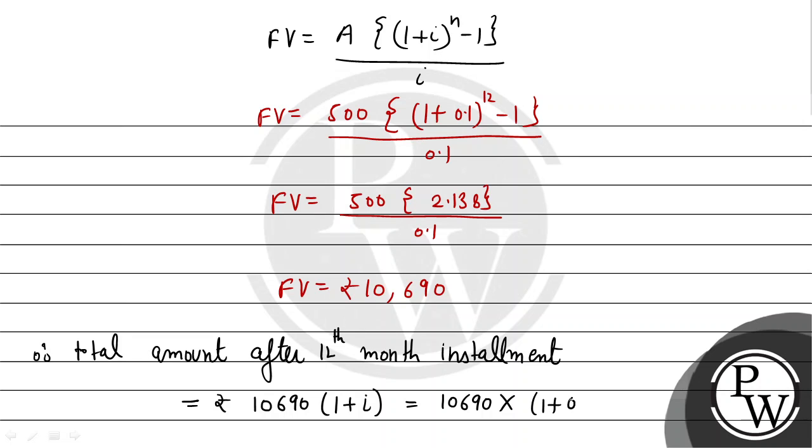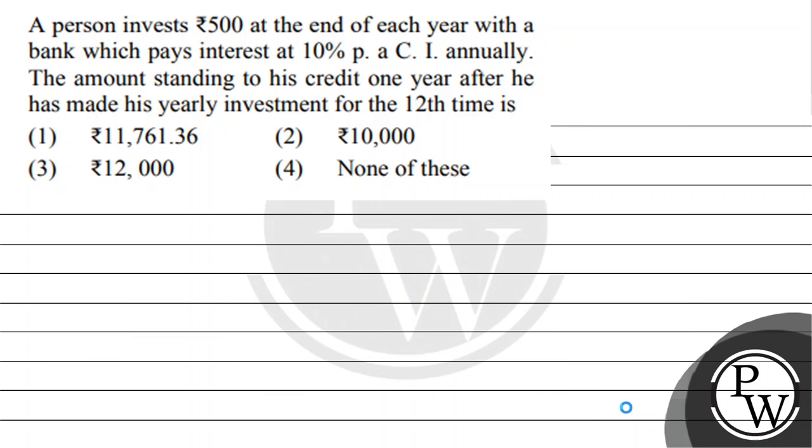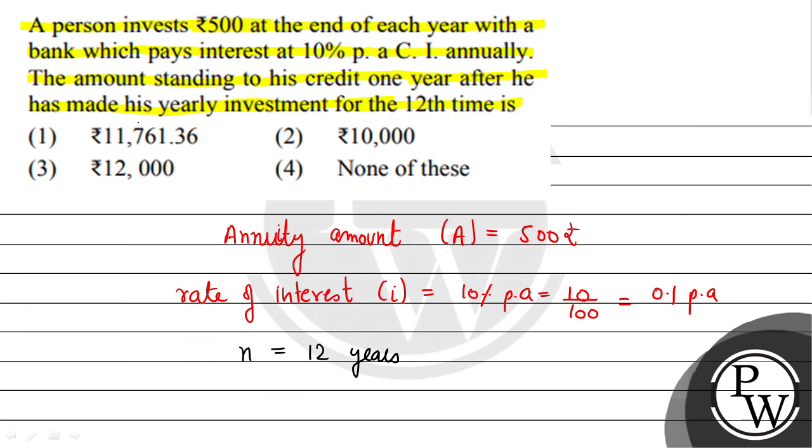1 plus i is your 0.1. So this becomes 10,690 multiplied by 1.01. This value comes out to be approximately 11,761.36 rupees. Let's check in the options - 11,761.36 rupees, that is your option number 1. So for this question, option number 1 is the final answer.